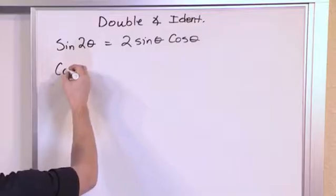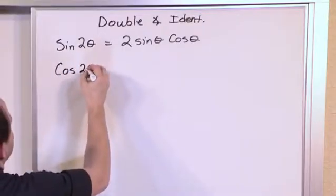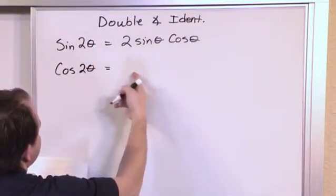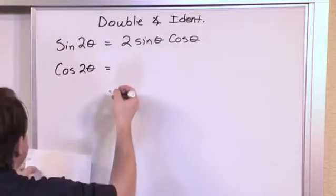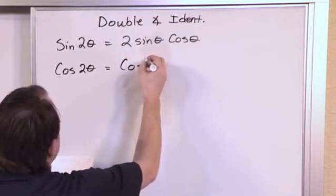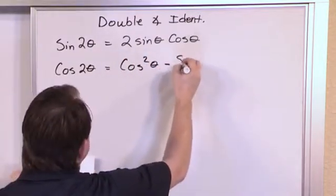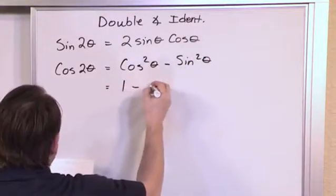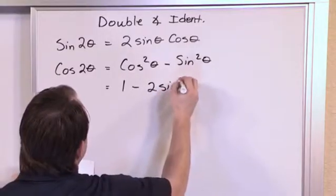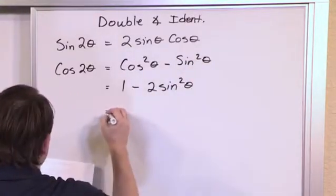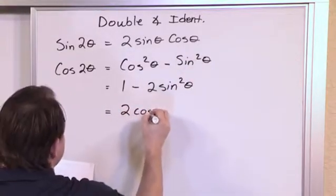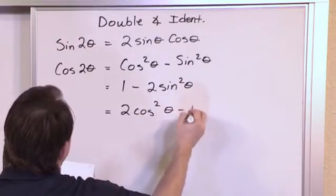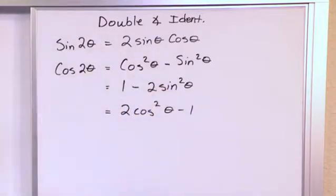We have a similar double angle identity for cosine. Now this one has several things that we can set it equal to: cosine squared of theta minus sine squared of theta. That works. We could also write it as 1 minus 2 times the sine squared of theta. We could also write it as 2 times the cosine squared of theta minus 1. So these are all valid equalities.